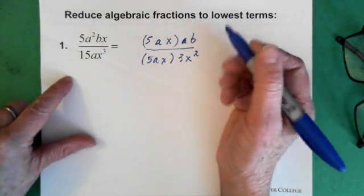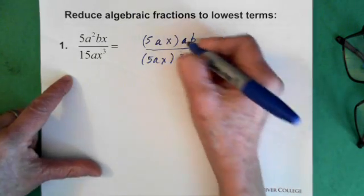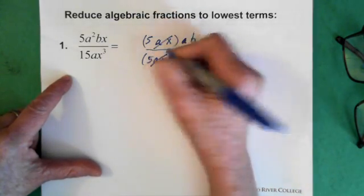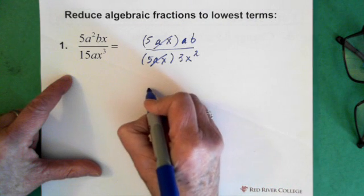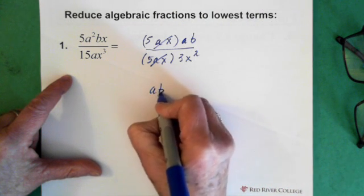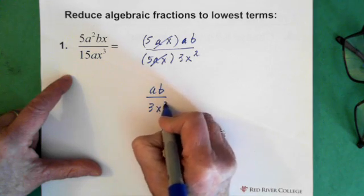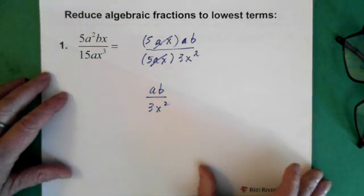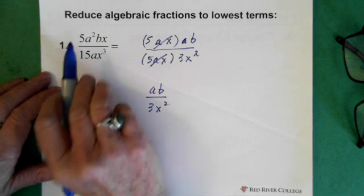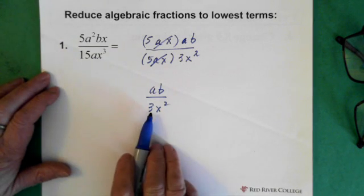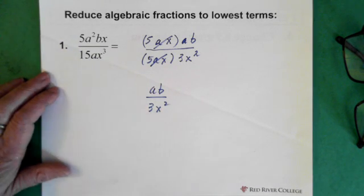So then 5ax divided by 5ax is 1. So these two are gone. And we're left with ab divided by 3x squared. And that would be the answer, basically the same fraction, but reduced to the lowest term.